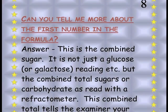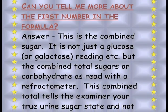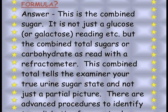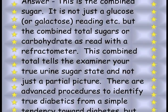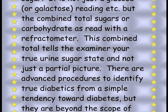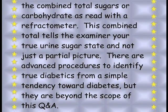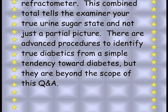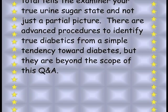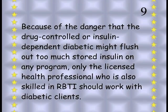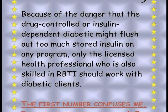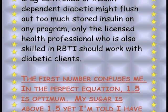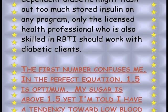Can you tell me more about the first number in the formula? This is the combined sugar — not just glucose or galactose, but the combined total sugars or carbohydrates as read with a refractometer. This combined total tells the examiner your true urine sugar state and not just a partial picture. There are advanced procedures to identify true diabetics from a simple tendency towards diabetes, but they are beyond the scope of this Q&A. Because of the danger that a drug-controlled or insulin-dependent diabetic might flush out too much stored insulin on any program, only a licensed health professional also skilled in RBTI should work with diabetic clients.